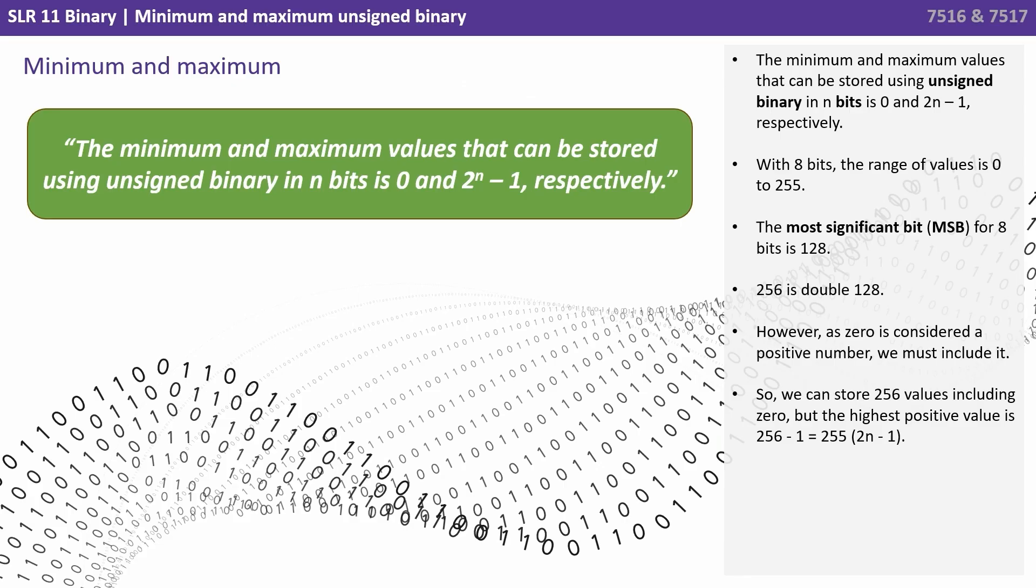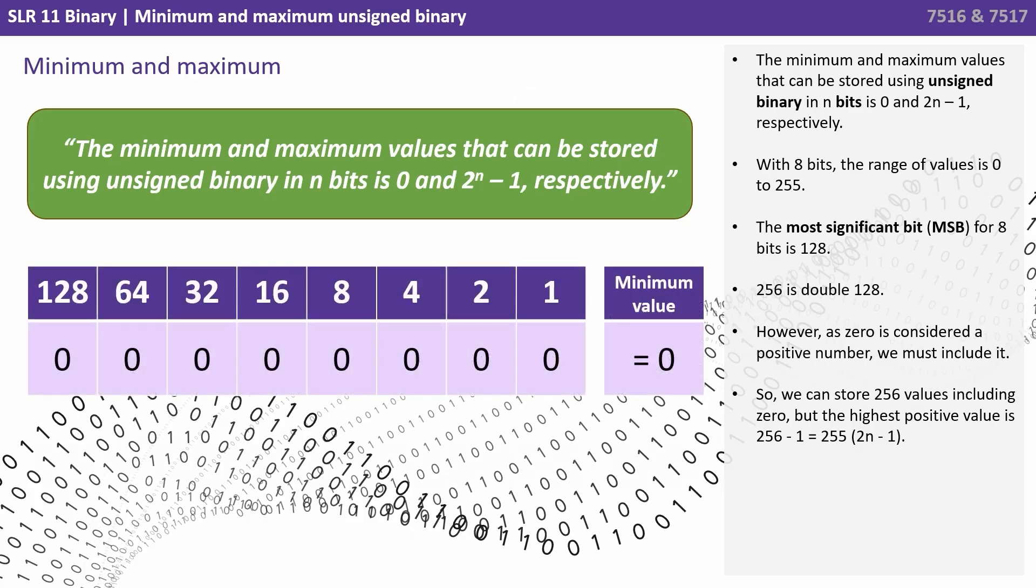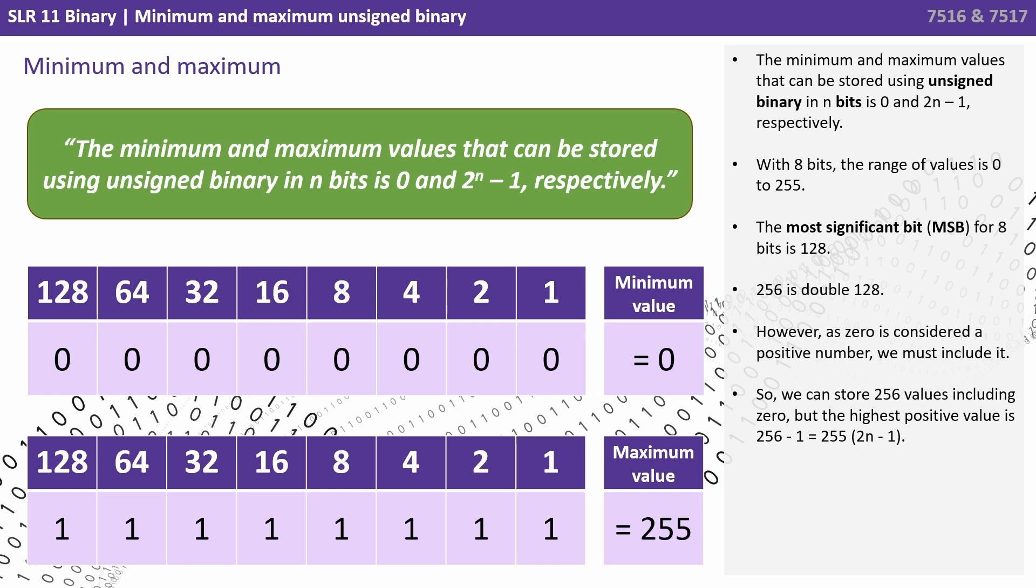The minimum and maximum values that can be stored using unsigned binary in n bits is 0 and 2^n-1 respectively. So with 8 bits, the range of values is 0 to 255.